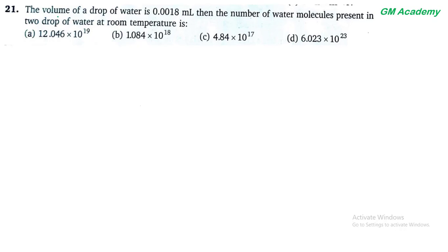Question 21 में क्या पूछा गया है? The volume of a drop of water is 0.018 ml. Then the number of water molecules present in two drops of water at room temperature. तो हमारे पास सबसे पहले एक drop water का volume दिया गया है। हमारे पास density of water जो होता है वो 1 gram per ml होता है।